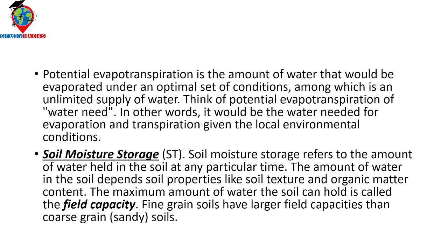Potential evapotranspiration is also very important — it refers to the water needed for evaporation and transpiration given local environmental conditions. Soil moisture storage refers to the amount of water held in the soil at any particular time, which depends on soil properties like soil texture and organic matter content. The maximum amount of water that soil can hold is called the field capacity.